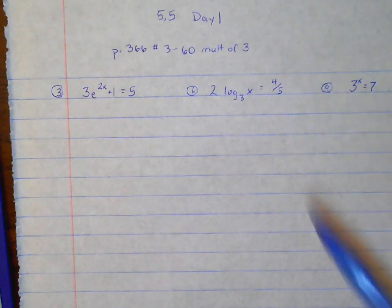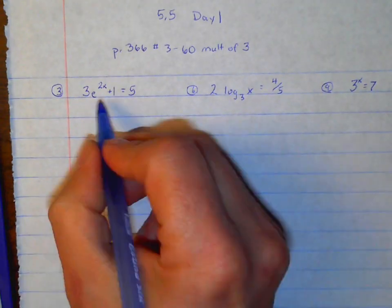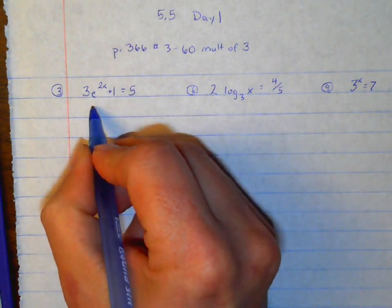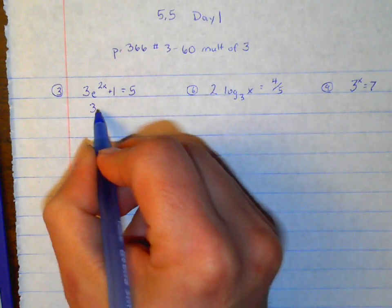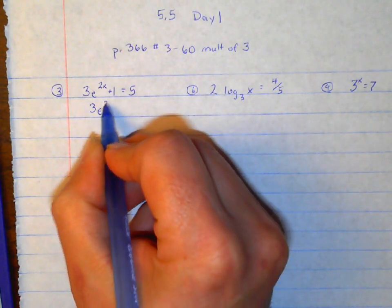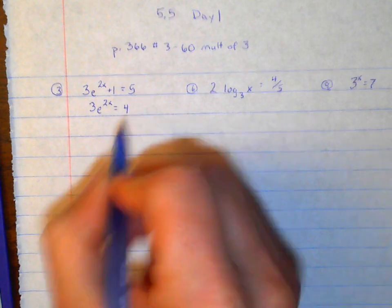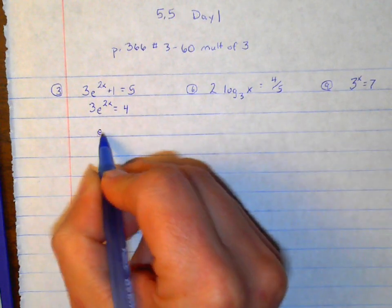Answers to 5.5 day 1. We want to solve for these. So to get x by itself here, I'm going to subtract the 1 over and divide by the 3.